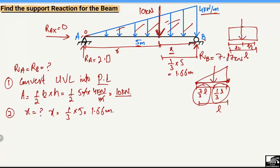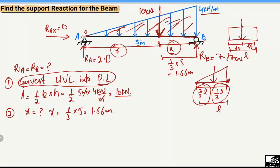So we have found the support reactions for this beam: R_A = 2.13 kN and R_B = 7.87 kN. This is the method for finding support reactions when we have a triangular (uniformly varying) load: first convert it to a point load, then find the moment arm, and apply equilibrium equations. Don't forget to subscribe to our channel for daily civil engineering videos. Thank you for watching.